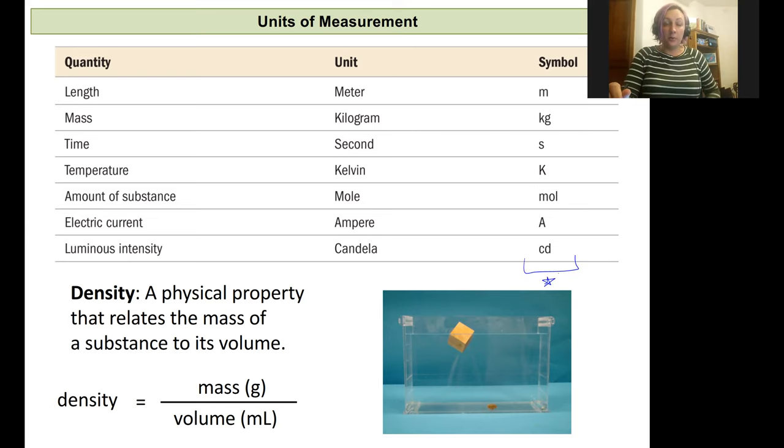Another unit of measurement that we're going to use a lot that is not as straightforward is a physical property called density. Density relates the mass of an object to its volume. Something with a very large density would have a large amount of mass in a small volume, and something with a very low density would have a small amount of mass in a larger volume. We can think about density relative to water, and I think that might make it the most intuitive.